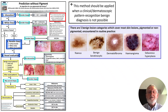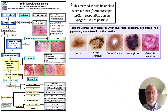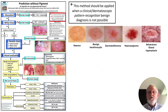This method should be applied when the clinical dermatoscopic pattern recognition benign diagnosis is not possible. We've already presented five common benign categories for pigmented lesions: nevus, benign keratinocytic, dermatofibroma, hemangioma and sebaceous hypoplasia — and non-pigmented lesions have the same five common benign options.